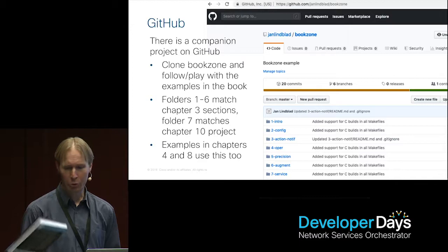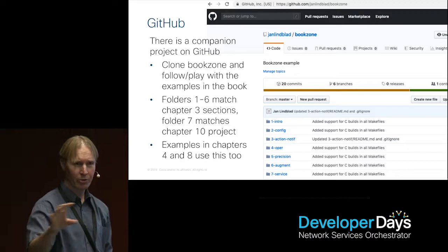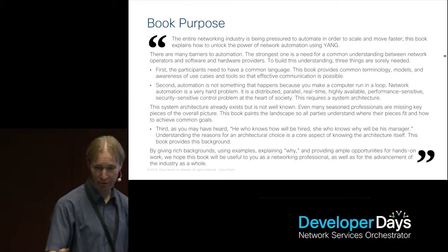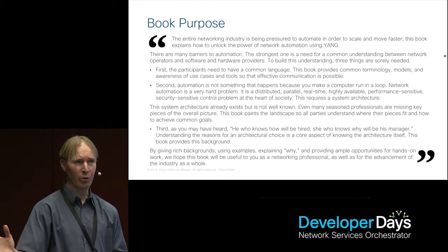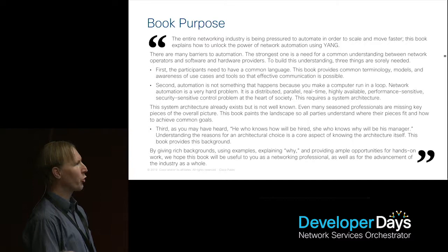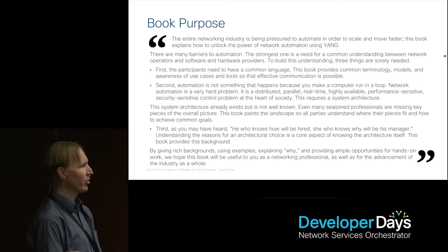What I wanted to spend the rest of the presentation on is to give you a short sample of each chapter — like Amazon's 'peek inside' that shows a few lines from every chapter so you can see if this is a book for you. One of the important things I want you to understand is the purpose. Why did we write this book? The entire networking industry is being pressured to automate in order to scale and move faster, and this book explains how to unlock the power of network automation using Yang.